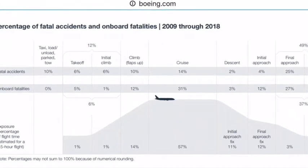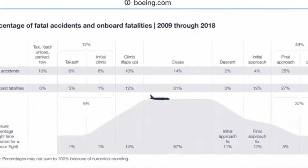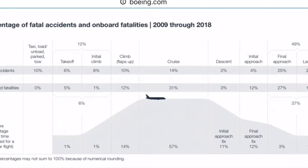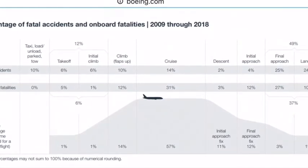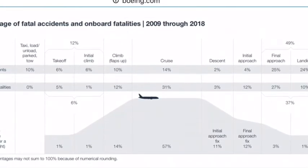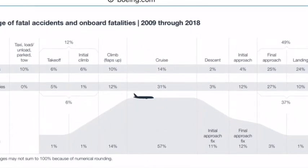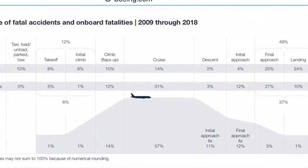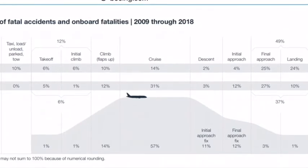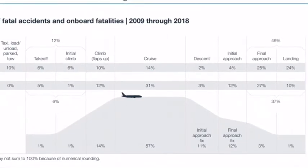Now let us look at the percentage of fatal accidents from 2009 to 2018 — about 9 years — using data from boeing.com. It is quite clear that landing approach and landing account for the maximum number of accidents at 49%, while takeoff and initial climb is about 12%. This confirms that descending and landing a plane is quite risky.